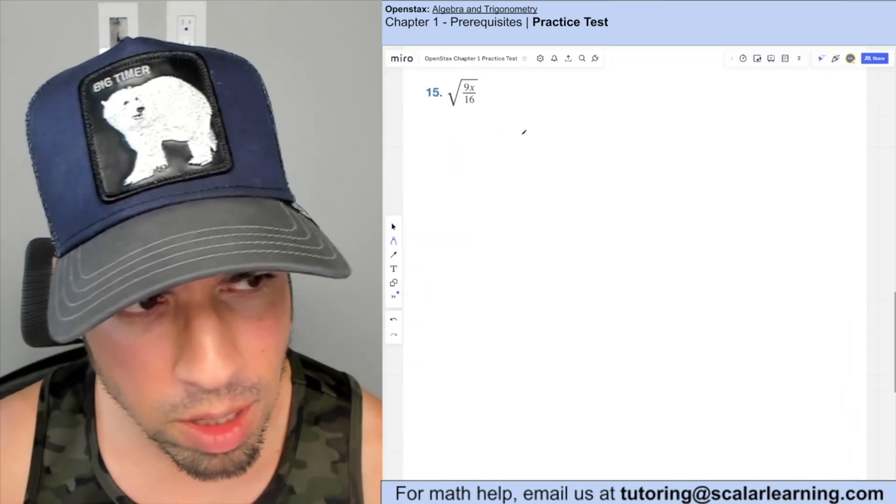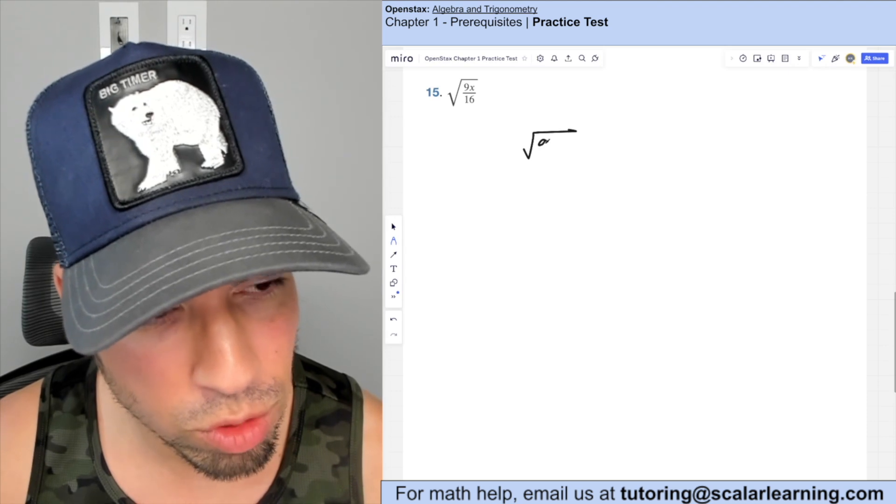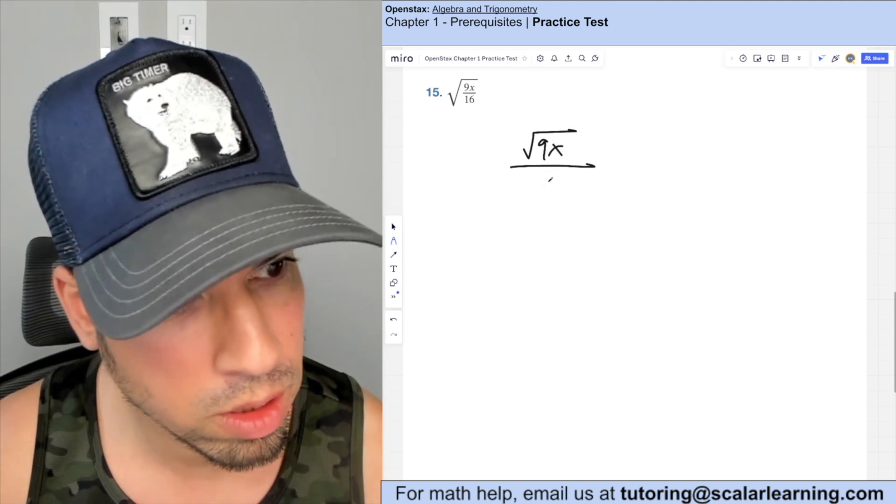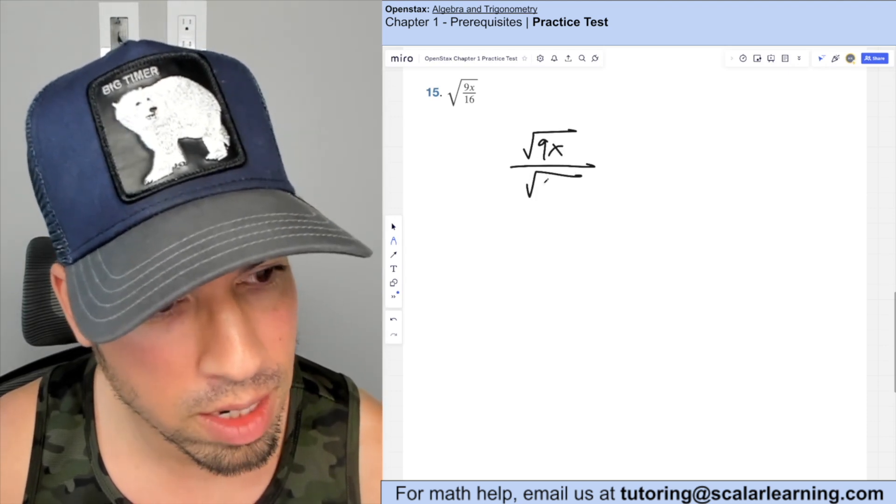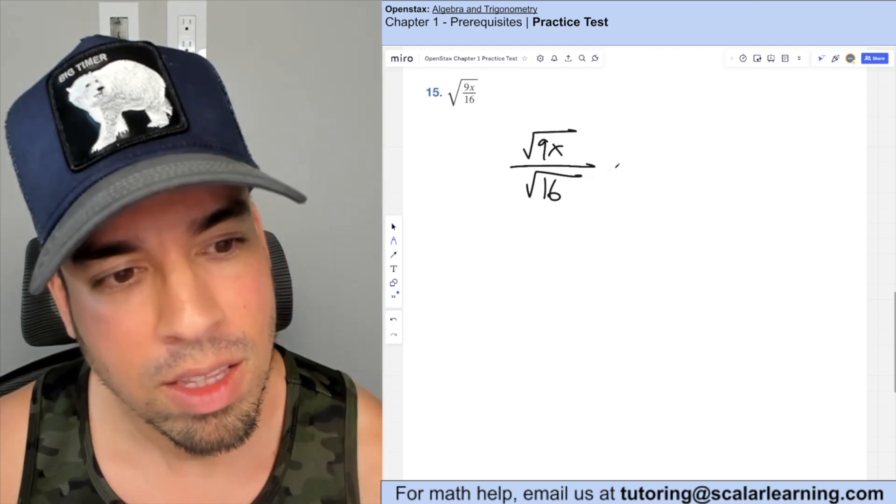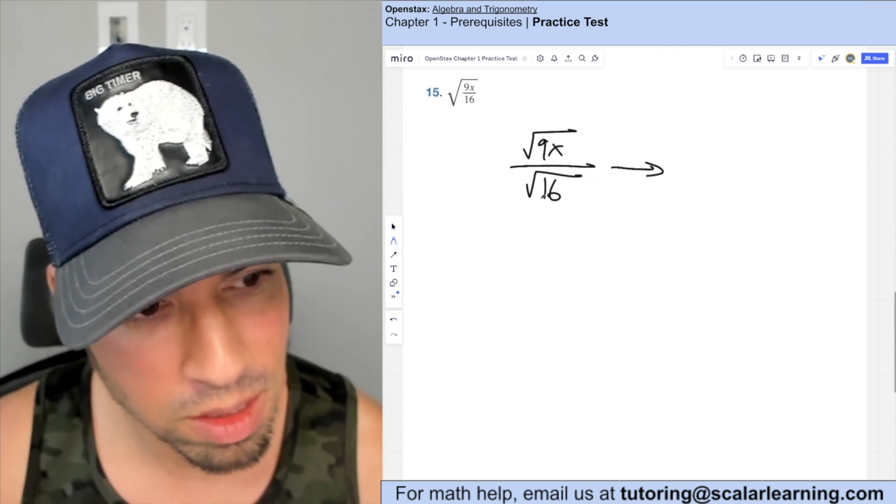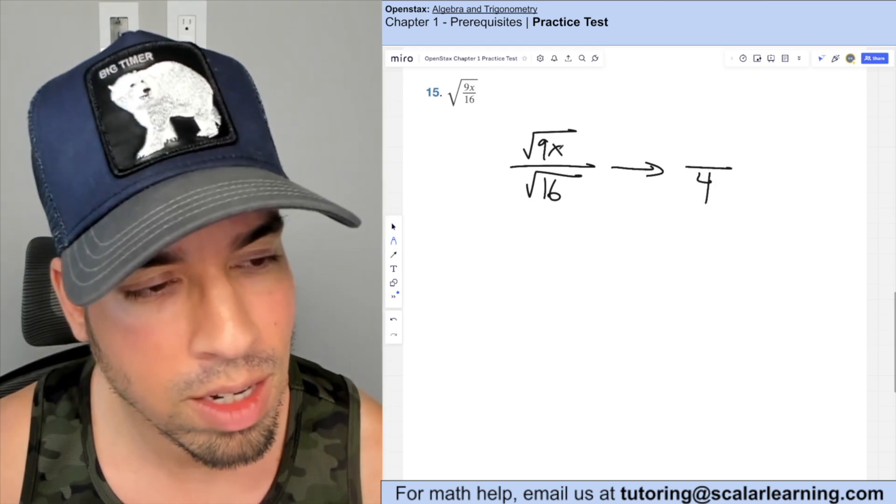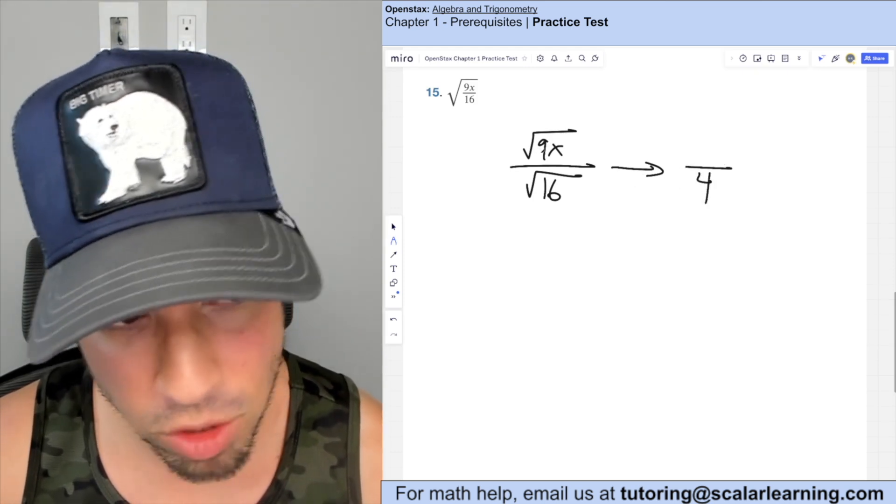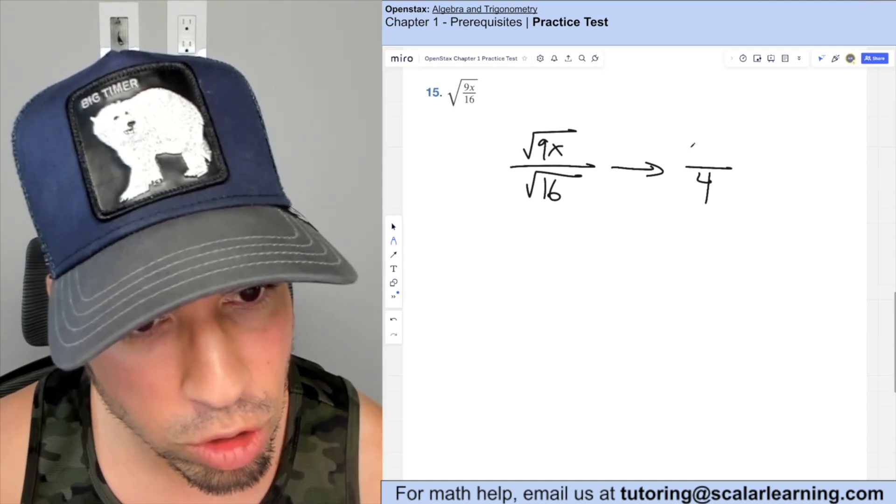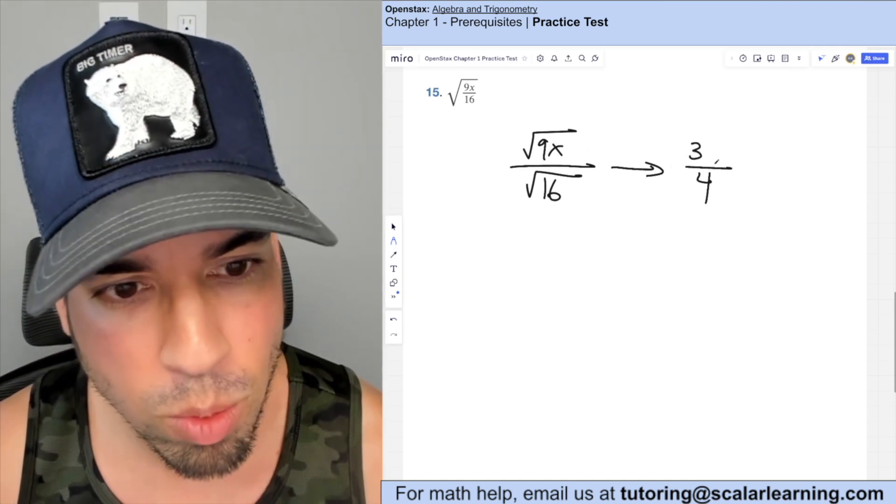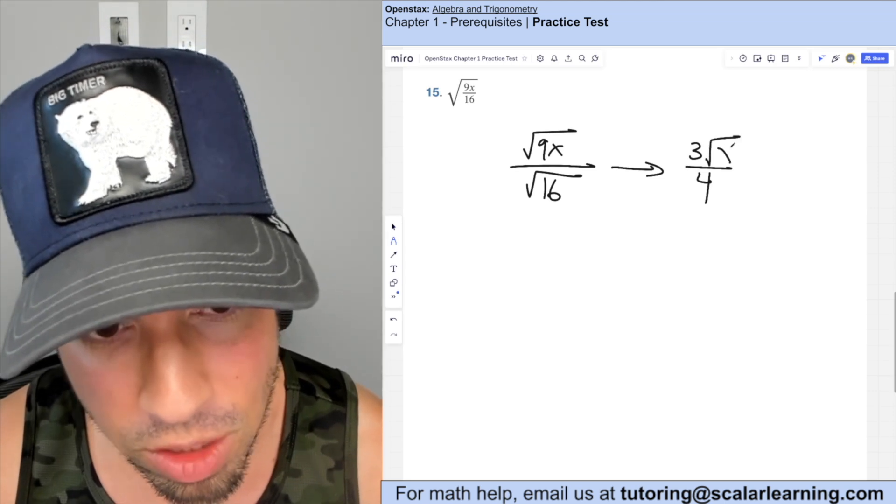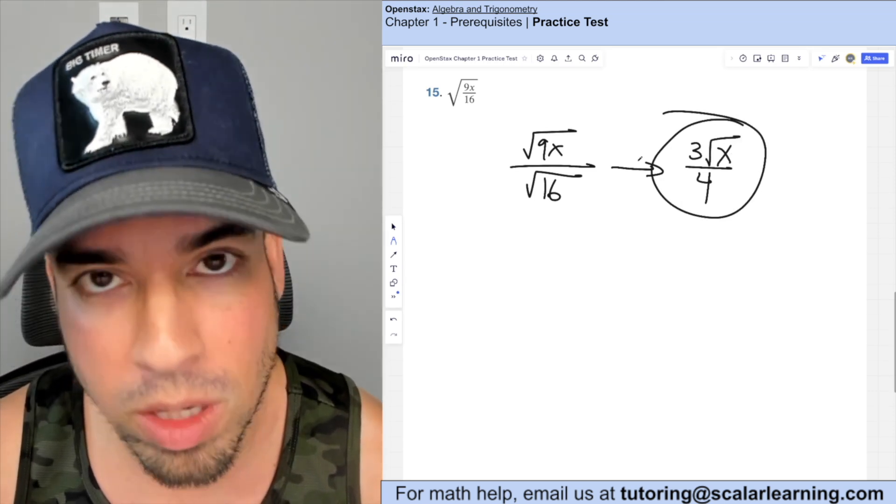In order to simplify this one, I'm going to first break it up into two separate square roots, which is totally allowed. So I'm going to say square root of nine x over square root of 16. Then I'm going to take the bottom one first, because this is a nice perfect square, the square root of 16 is four, then on top, nine is a perfect square. So I can take the square root of nine, which is three that comes outside the radical. But what stays inside is the x, which is trapped. There's the winner.